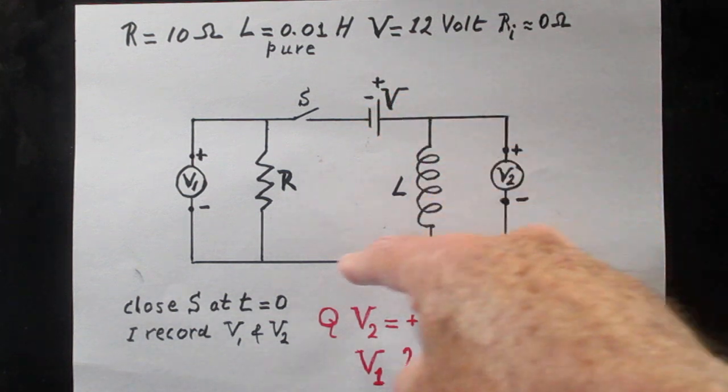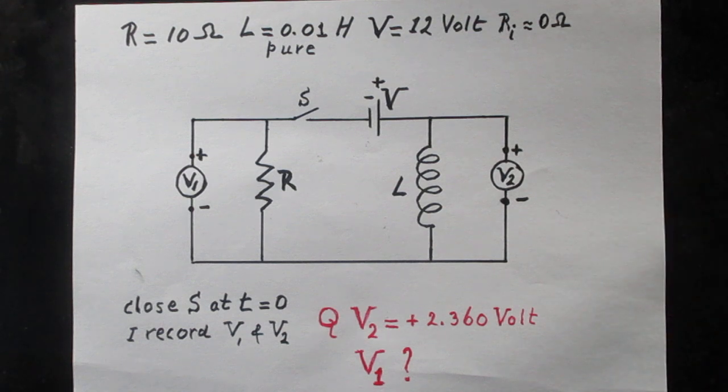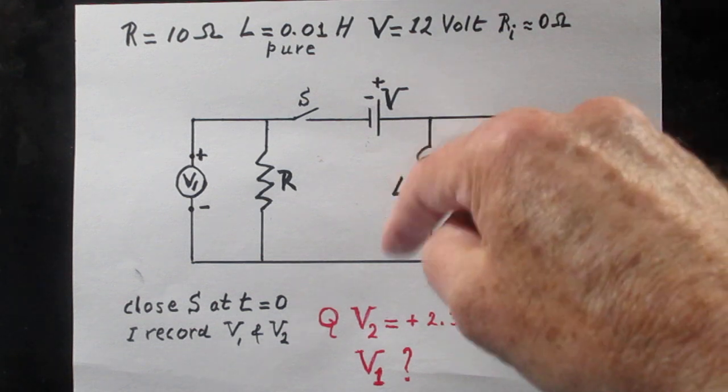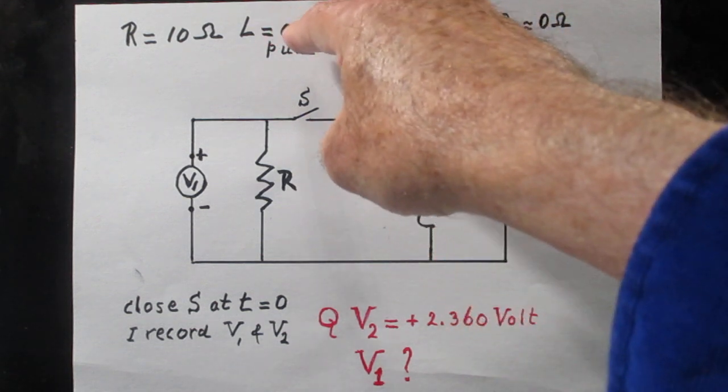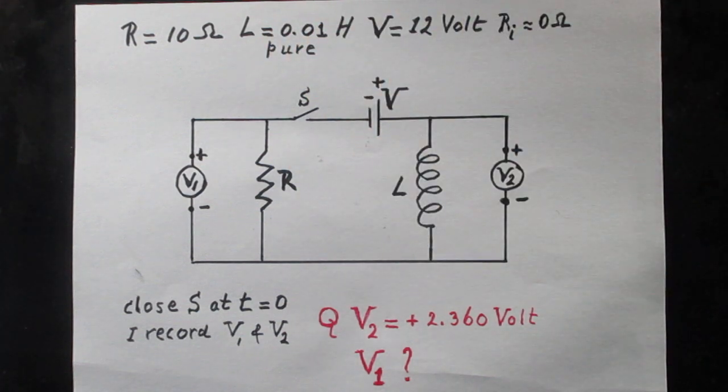Here is a pure self-inductor. What that means is that it has no ohmic resistance. The self-inductor is 0.01 Henry. The word pure indicates that it has no ohmic resistance.